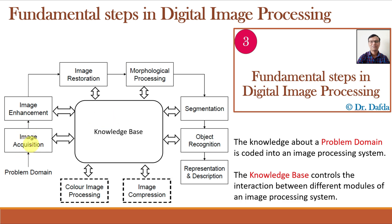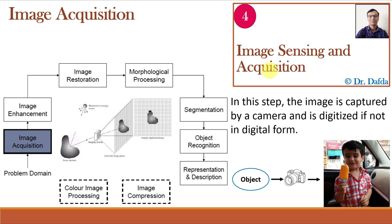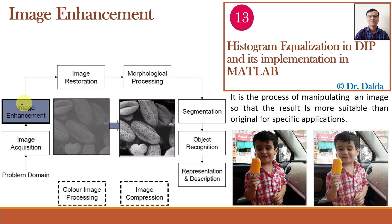The first step is image acquisition. Acquisition means to acquire or obtain the image after sensing. If this is our object, we sense and acquire the image using a digital camera to get our digital image. Image acquisition will always be the very first step in image processing, and image sensing can be done using a single sensor, a line sensor, or an array sensor.